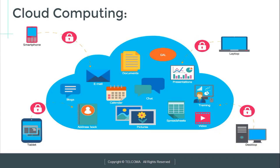This diagram shows how we can access various services over our devices. For example, a laptop is accessing presentations, smartphones are accessing emails, and a tablet is accessing address books. The cloud provides multiple services like documents, emails, calendars, chat, and spreadsheets saved over the internet, meaning we can access these services from anywhere and from any device as long as we have an internet connection.